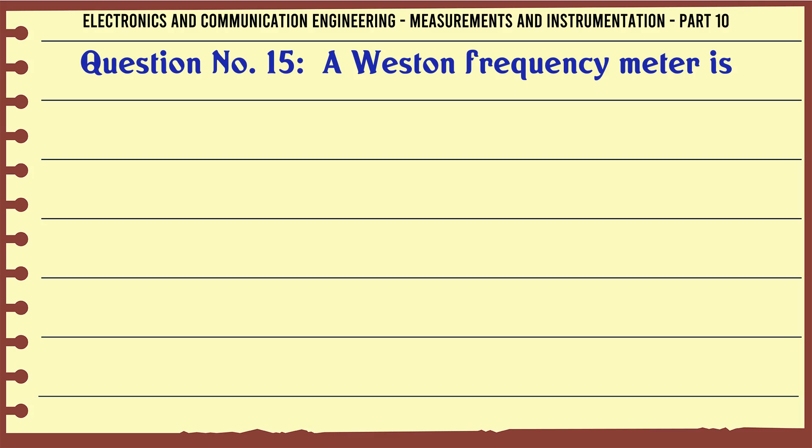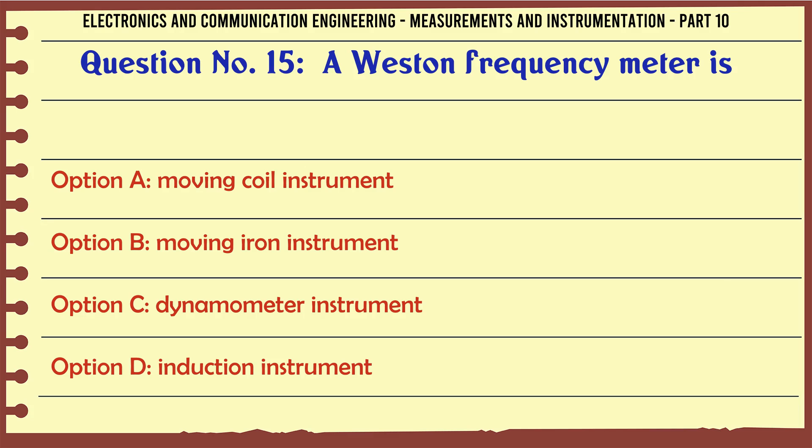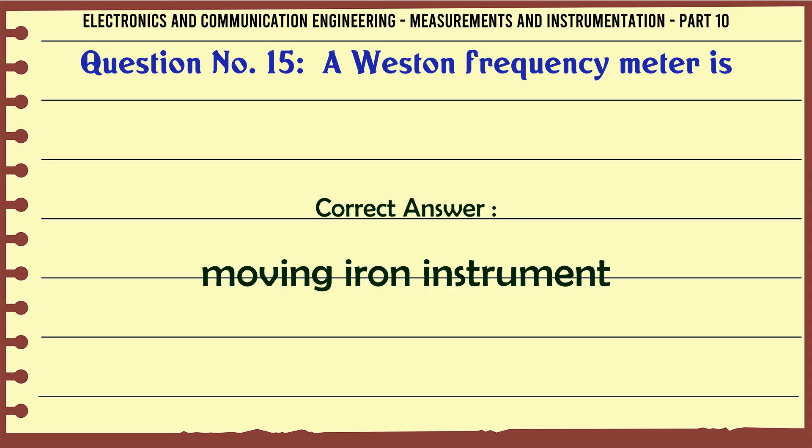A western frequency meter is: A) moving coil instrument, B) moving iron instrument, C) dynamometer instrument, D) induction instrument. The correct answer is moving iron instrument.